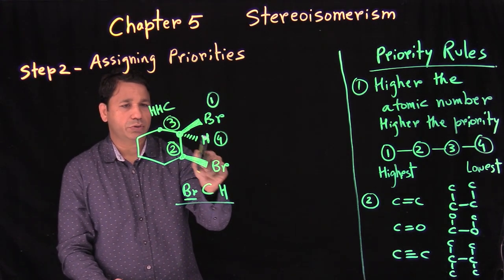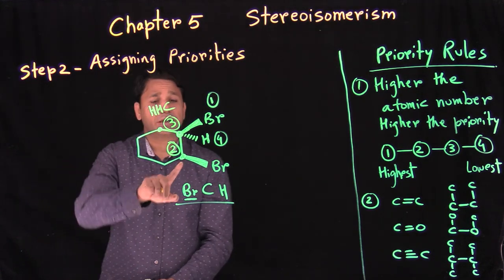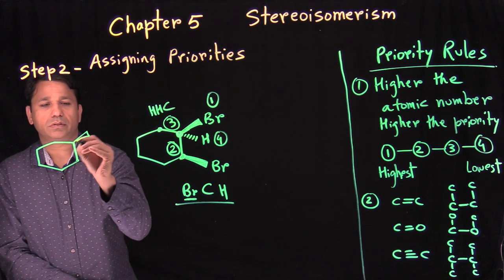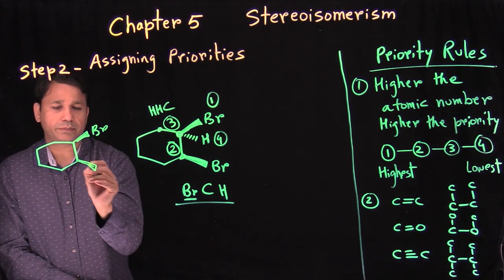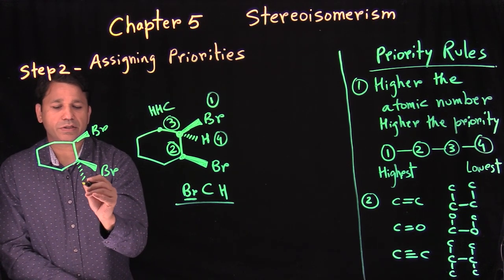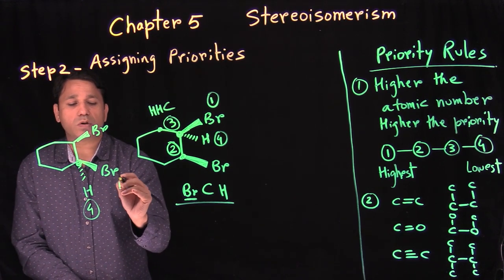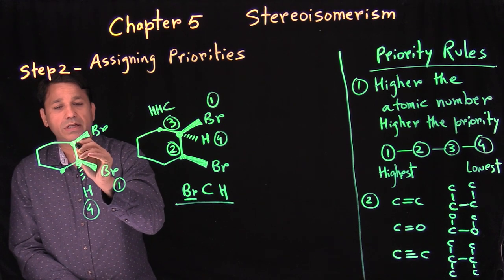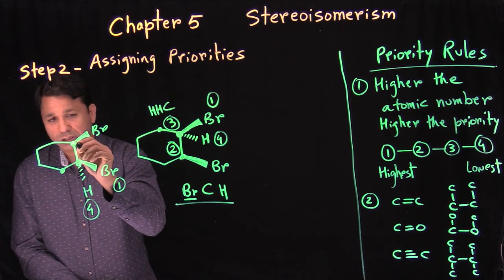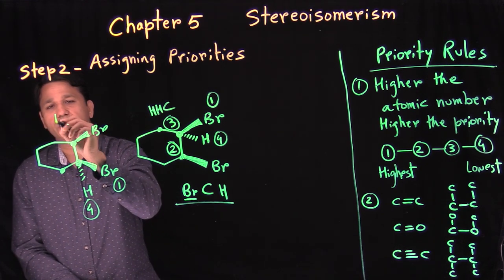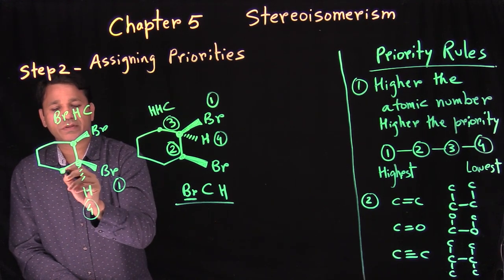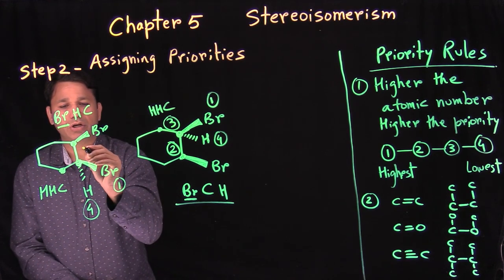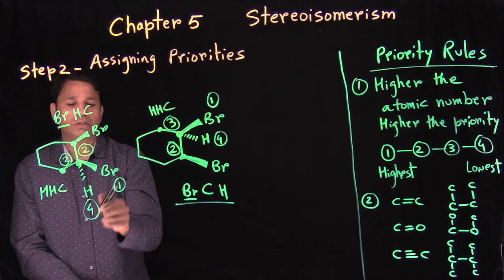For the second stereogenic carbon: hydrogen gets number four priority, bromine gets number one. The two adjacent carbons are the same at first point of contact. Going to the second point of contact from one carbon: bromine, a hydrogen, and a carbon — Br, H, C. From the other carbon: hydrogen, hydrogen, and a carbon — H, H, C. The bromine gives higher priority, so that group gets number two and the other gets number three.